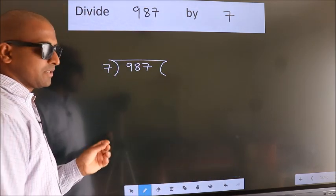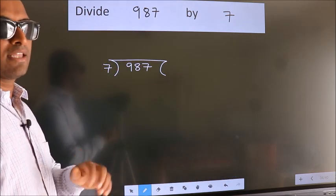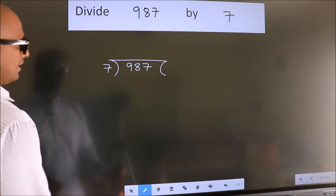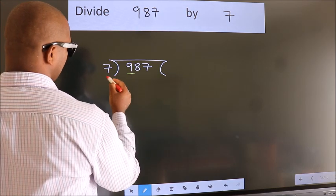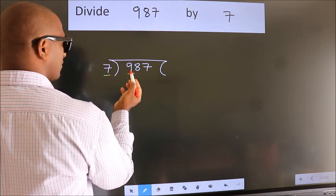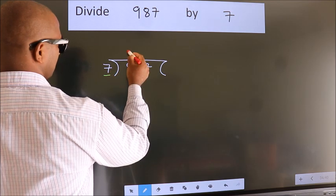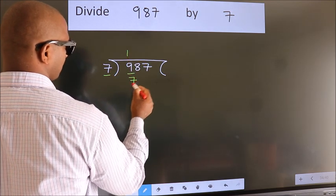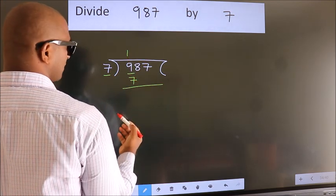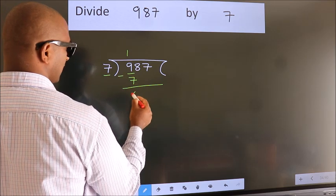This is step 1. Next, here we have 9, and here 7. A number close to 9 in the 7 table is 7 once 7. Now we should subtract. We get 2.